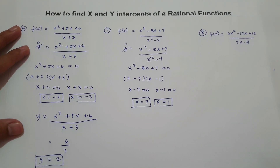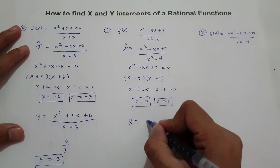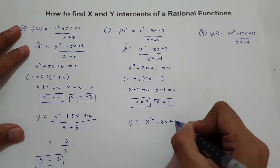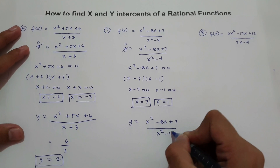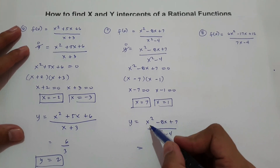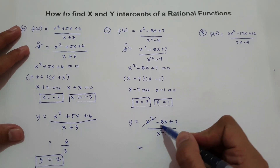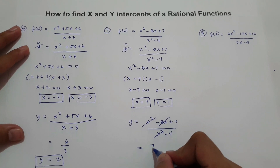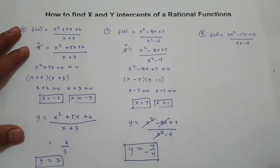For y intercept of number 7, substitute x = 0 into y = (x² − 8x + 7) / (x² − 4). When x = 0, all x terms become 0, leaving 7 over negative 4. So our y intercept is 7 over negative 4.